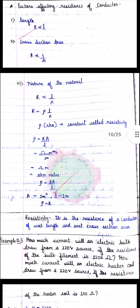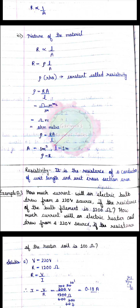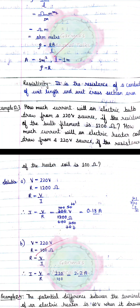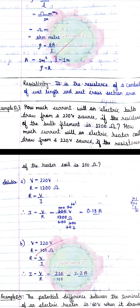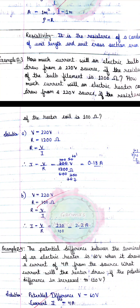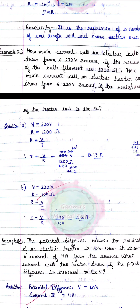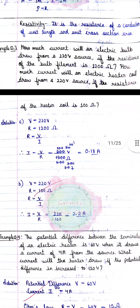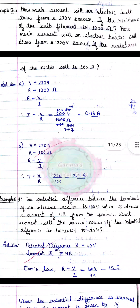Resistivity (ρ) क्या होती है — it is the resistance of a conductor of unit length and unit area of cross-section. Next question: How much current will an electric bulb draw from a 220 volt source if the resistance of the bulb filament is 1200 ohm? हमारे पास V और R दोनों हैं, तो I = V/R से current निकाल सकते हैं।